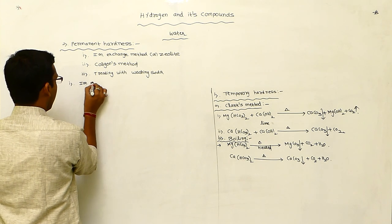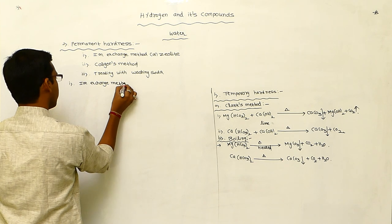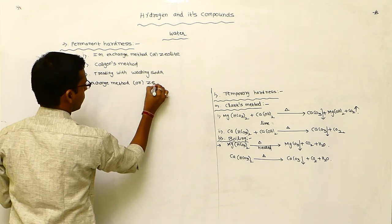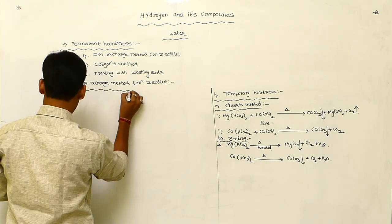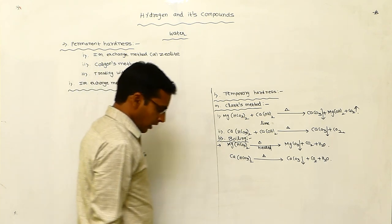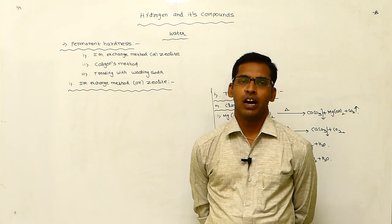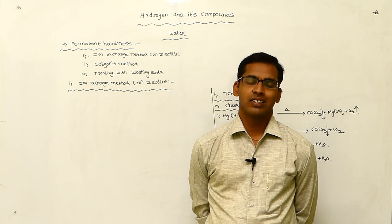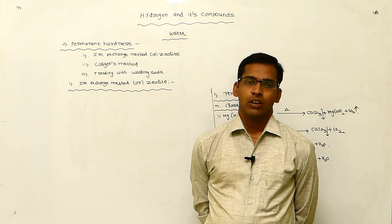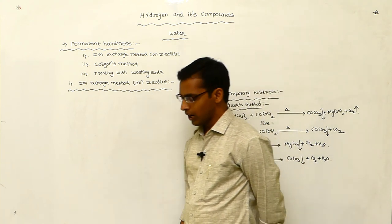The ion exchange method, also called zeolite, is a suitable method for removing permanent hardness. This ion exchange method is also called zeolite. Zeolite means sodium aluminum silicate — sodium aluminum silicate is called zeolite.